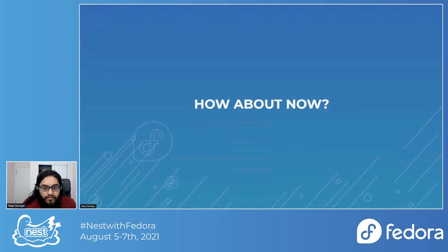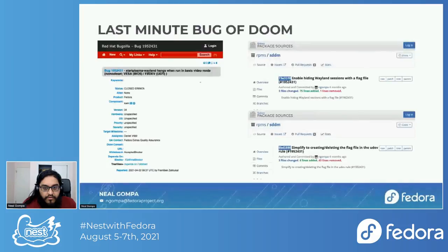So we're good now, right? We have the installer working, the sessions are preferred, it boots up, the desktop looks great, and fixes are coming in for Plasma 5.21 that are super Wayland-focused. Well — not exactly. There was a last-minute bug of doom. And when I say last minute, I mean this showed up one day before Fedora Linux 34's GA.